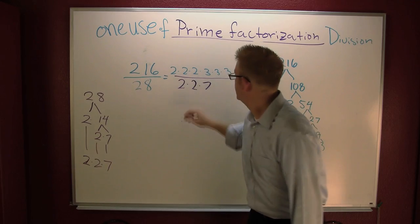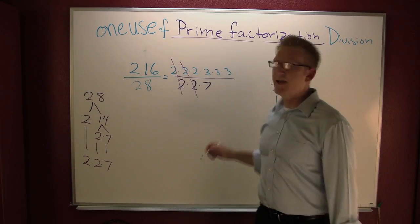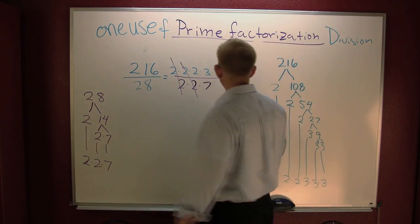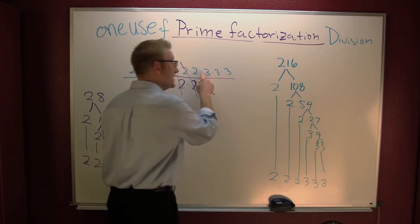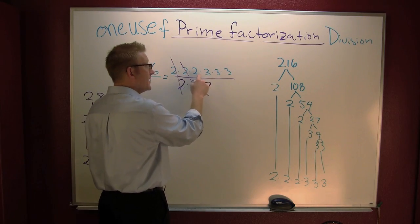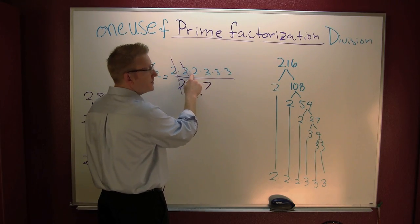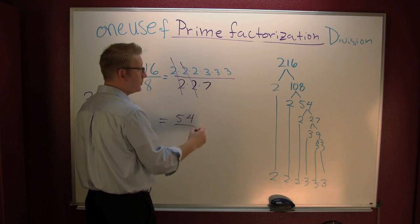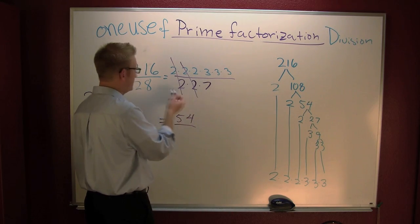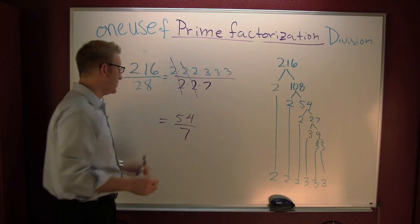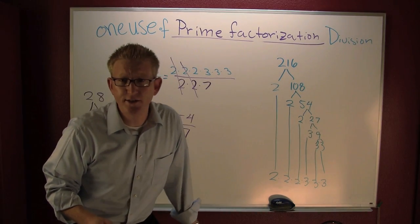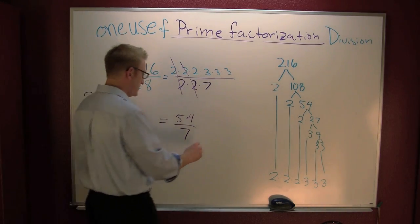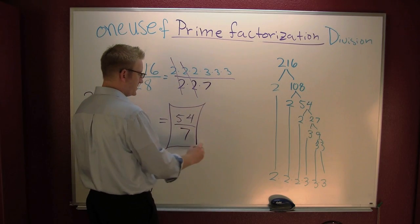Fight! So the 2s cancel each other out. What's left? Here I have 3 times 3 times 3, which is 27, times 2 — that's 54. Over 7. So 216 over 28 simplifies to 54 over 7.